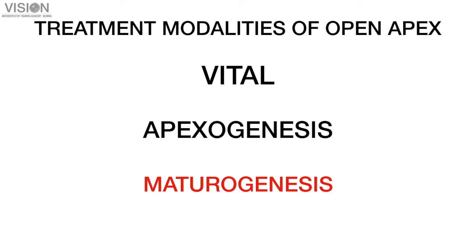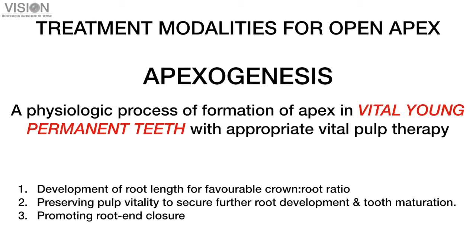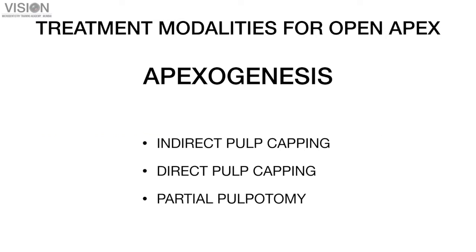Apexogenesis is the attempt made by the clinician to continue root formation so that apical closure happens as it would naturally. The other word for apexogenesis is maturogenesis, which aims at completing the maturation of root development. Apexogenesis aims at completing root development for a favorable crown-root ratio, preserving pulp vitality to secure further root development and tooth maturation, and promoting root enclosure similar to natural tooth development. There are three different ways to perform apexogenesis: indirect pulp capping, direct pulp capping, and partial pulpotomy.